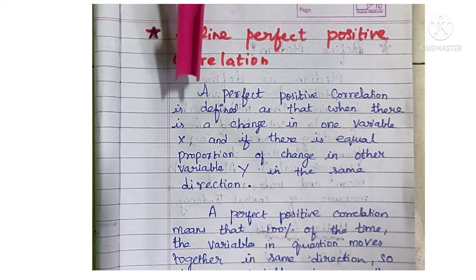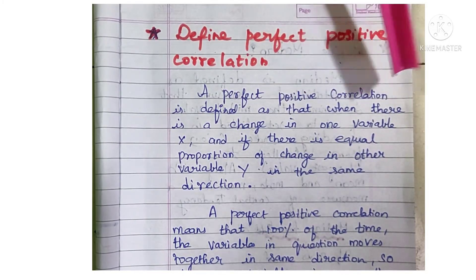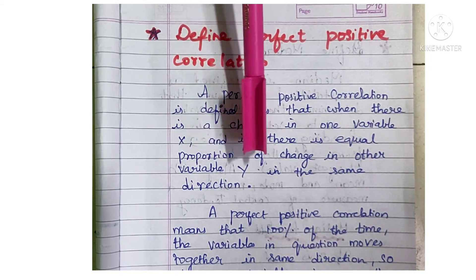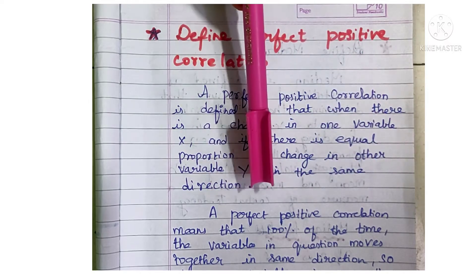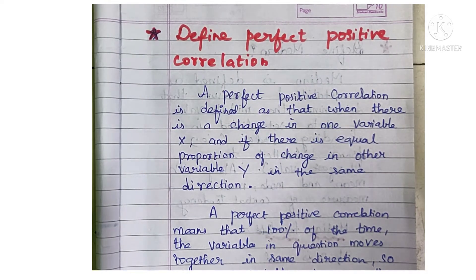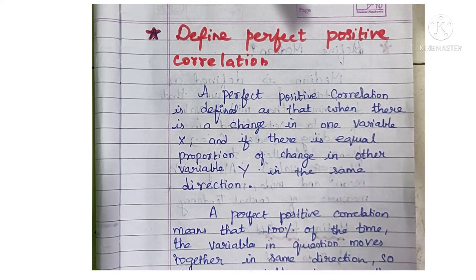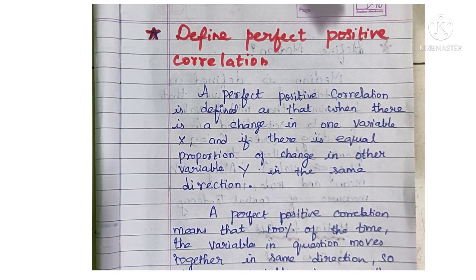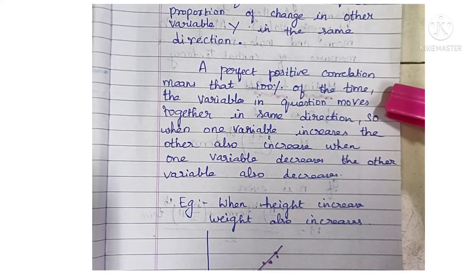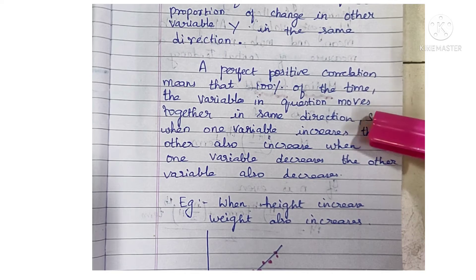Define perfect positive correlation. A perfect positive correlation is defined as when there is a change in one variable x and there is an equal proportion of change in the other variable y in the same direction. Alternatively, perfect positive correlation means that 100% of the time the variables in question move together in the same direction.